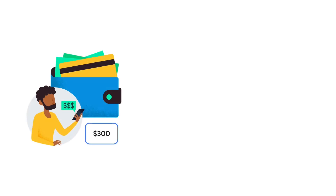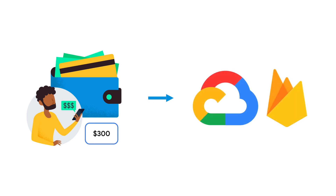If you're new to Firebase and want to try the paid products before switching to the Blaze plan, you can use the Google Cloud free trial. All new Google Cloud and Firebase users can have a 90-day trial period that includes $300 in free cloud billing credits to explore and evaluate Google Cloud and Firebase products and services. During the trial period, you'll be provided a free trial cloud billing account, and any Firebase project that uses that billing account will be on the Blaze pricing plan during the free trial period.